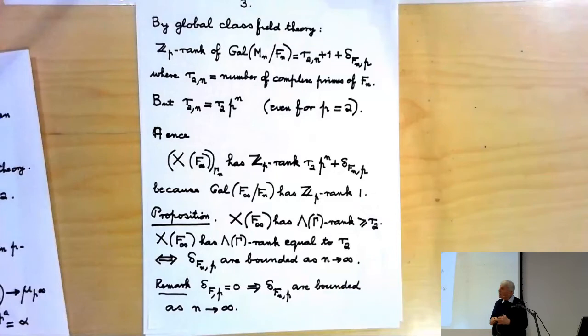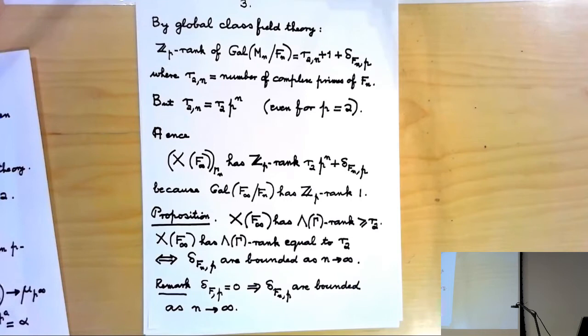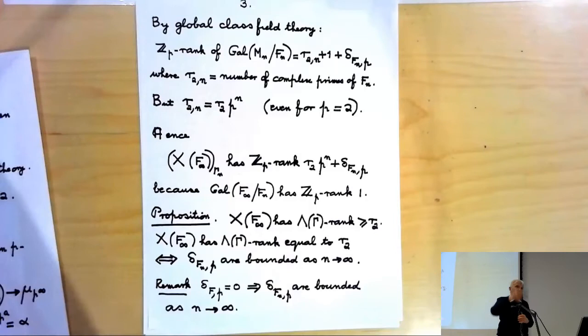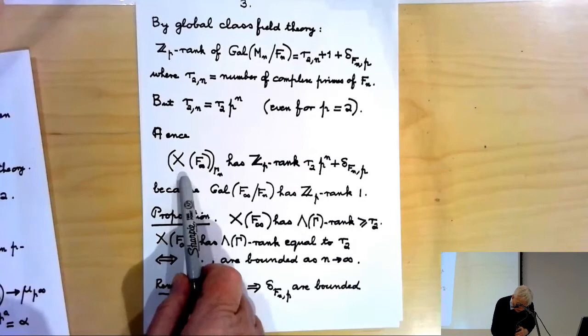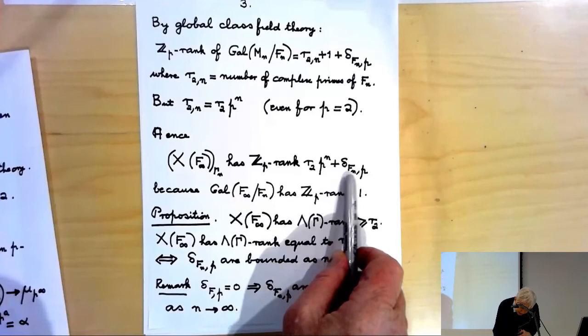Now, R2 is the number of complex primes of the field F_n, which is an extension of degree p^n of F. Complex primes cannot become real primes — that's forbidden for a ZP extension. So in fact R2_n must be just R2 times p^n, because every complex prime is going to split completely when you go up. So finally, the ZP rank of X(F∞)_{gamma_n co-invariants} is R2 · p^n plus delta(F_n, P).